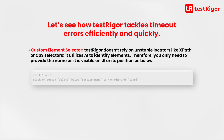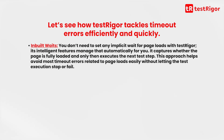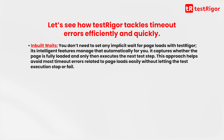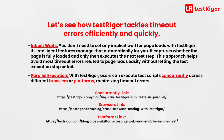Custom element selector — TestRigger doesn't rely on unstable locators like XPath or CSS selectors. It utilizes AI to identify elements. Therefore, you only need to provide the name as it is visible on the UI or its position. In-built waits — you don't need to set any implicit wait for page loads with TestRigger. Its intelligent features manage that automatically for you. It captures whether the page is fully loaded, and only then executes the next test step. This approach helps avoid most timeout errors related to page loads easily without letting the test execution stop or fail. Parallel execution — with TestRigger, users can execute test scripts concurrently across different browsers or platforms, minimizing timeout errors.